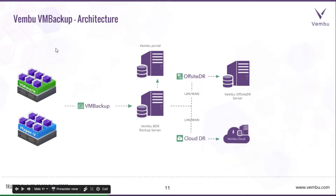This is the architecture of Wambu VM Backup. The Wambu BDR backup server is where all virtual machines are backed up and data is stored using the Wambu Hive file system. Wambu VM Backup acts as a proxy between VMware and the Wambu BDR backup server. It is purely agentless — you configure the backup from the BDR server itself, and the VM Backup proxy communicates with the VMware server, reads the data, compresses and encrypts it, and sends it to the BDR server for storage. Optionally, you can replicate data to a remote data center using Wambu Offsite DR, or to Wambu Cloud using Wambu Cloud DR. The Wambu portal manages all billing and licenses, which are automatically supplied to your Wambu BDR server.